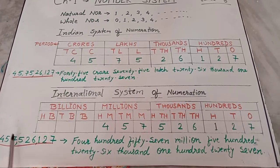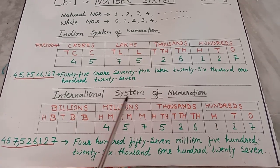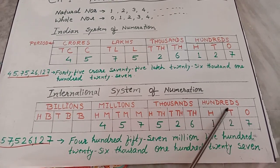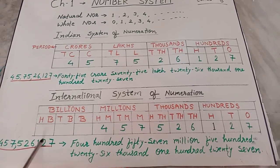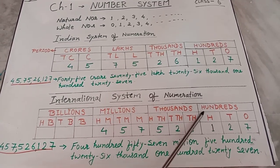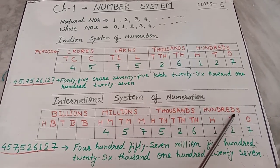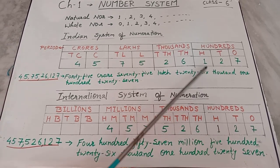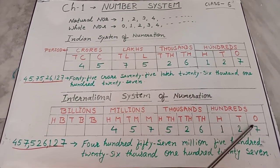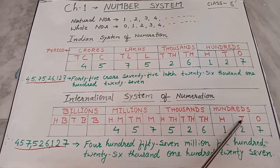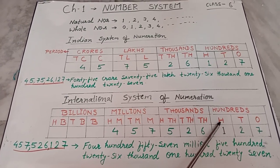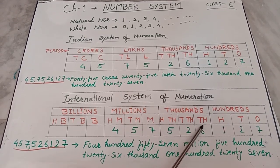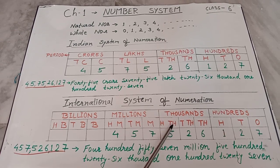In the international system of numeration, taking the same number and writing it in words using the place value chart: the 100s period is the same as in the Indian system — 1s place, 10s place, and 100s place. But the 1000s period is divided into three parts here: 1000s, 10,000s, and 100,000s place.